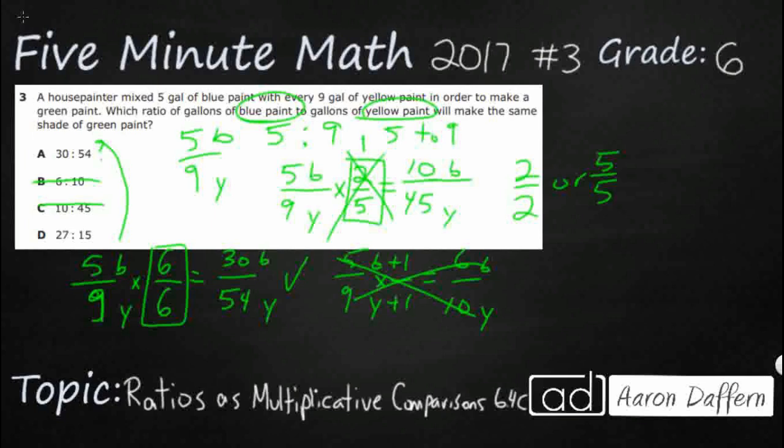And let's take a look at D. So D, we're going to look at our 5 in blue to 9y. We're going to look at 27 fifteenths. Hmm. You know what? If we were to flip this, that could almost work. So look at what we have here.